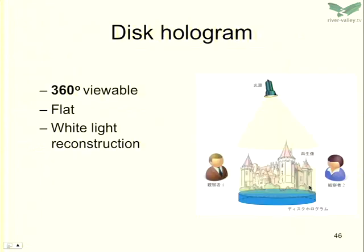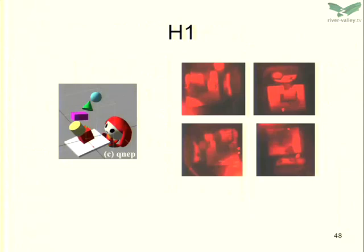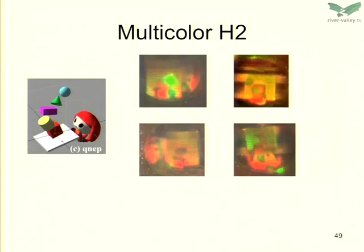Here are results from this hologram. This is the concept and parameters. We just make H1 for this hologram; to make H2 we just put the holographic plate and transfer optically. Here is the reconstructed image from H1 with laser reconstruction. And this is H2 with multi-color — I made two masters and transferred with green and red lasers.